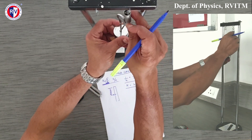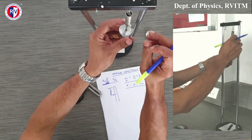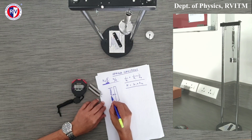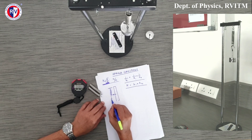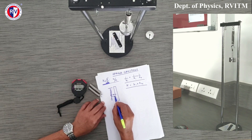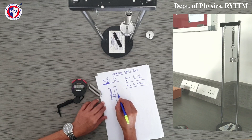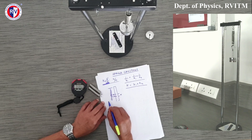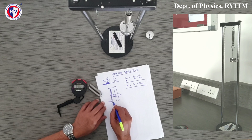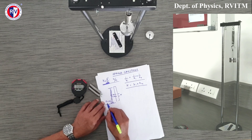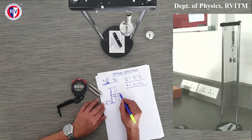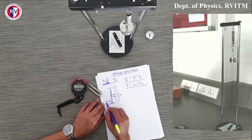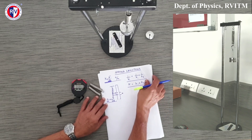After this, we suspend a definite load from the spring. When you put a load, the spring will elongate and come to some new position, so the pointer will now show another reading. This difference in the two readings gives you the extension. Whatever mass you are adding, the force will be M into g. This way F you are applying and x you can measure. Using this we can find out the spring constant. That is called the static method.